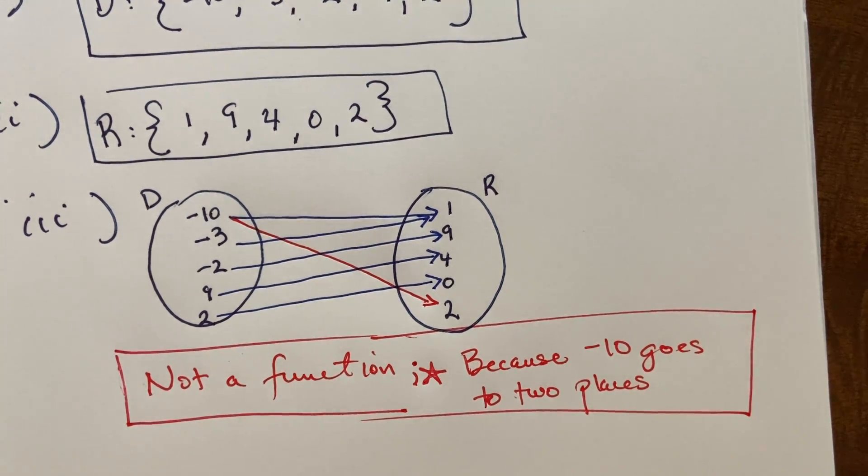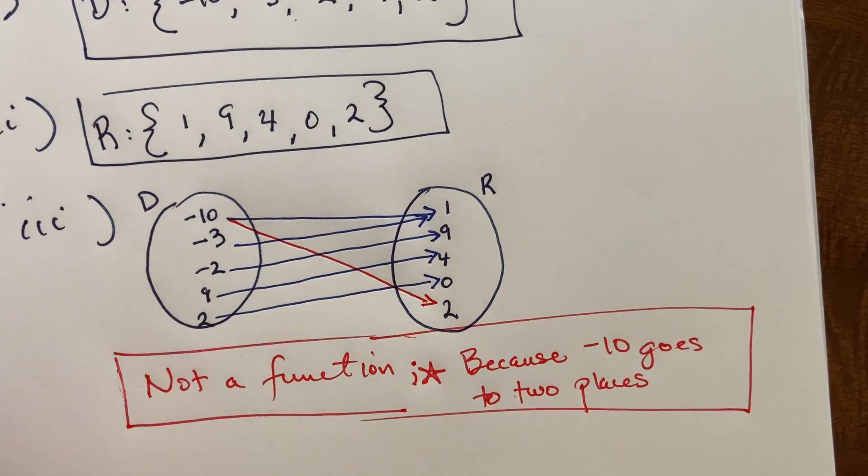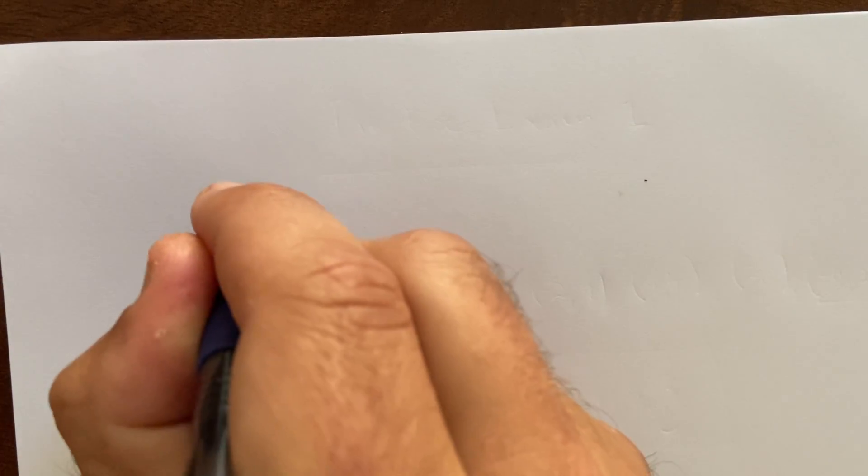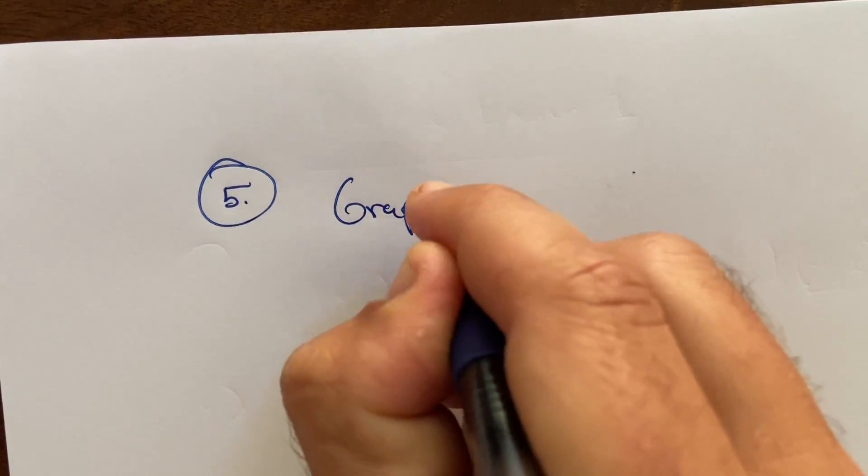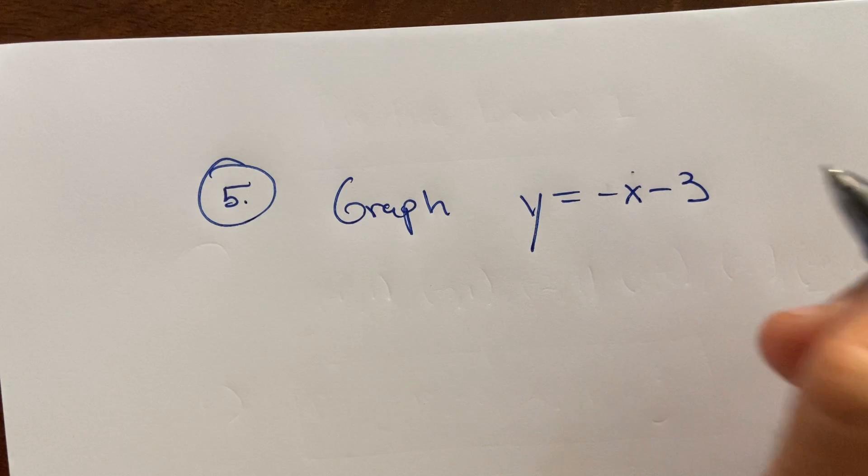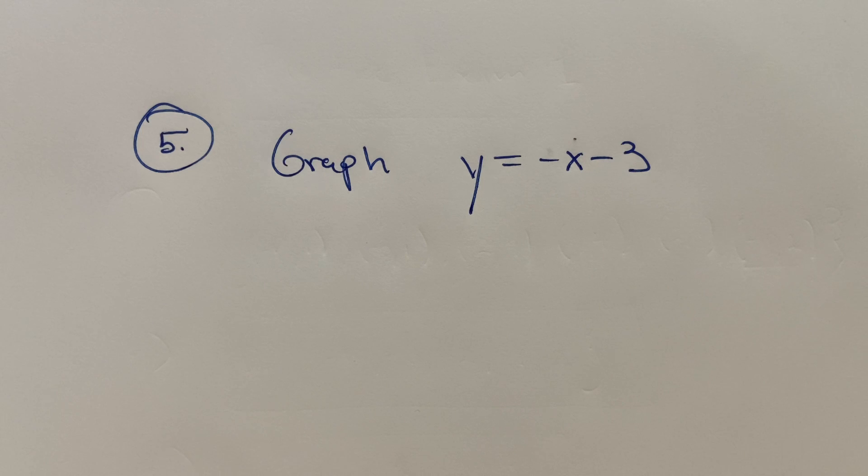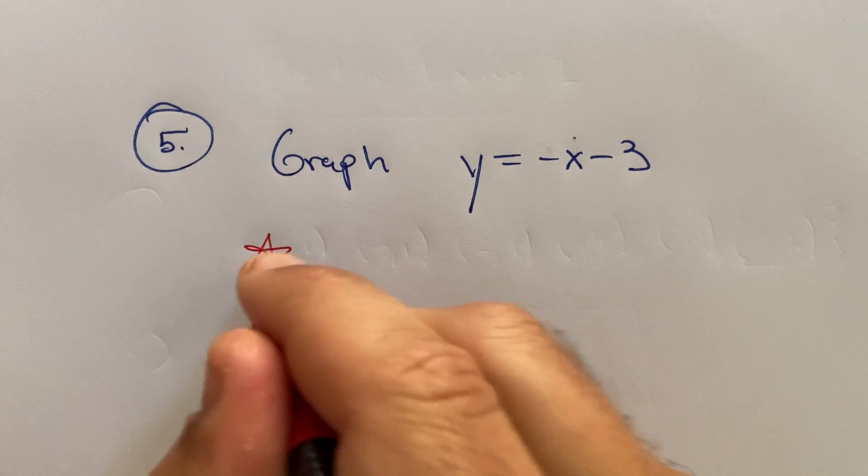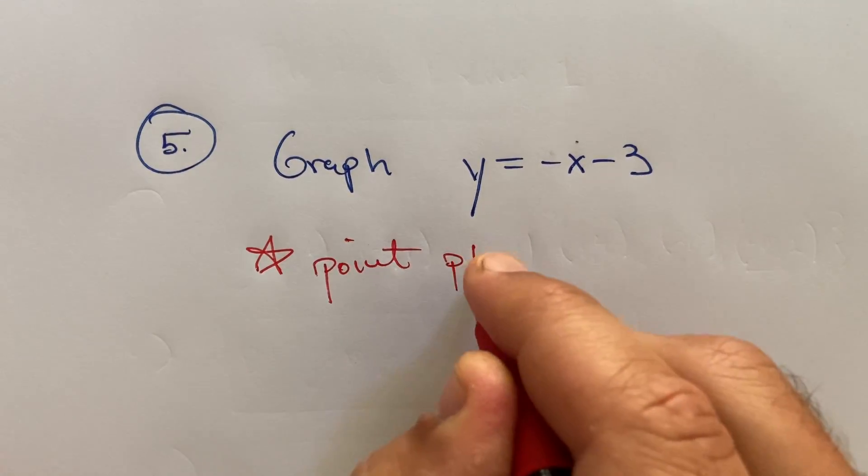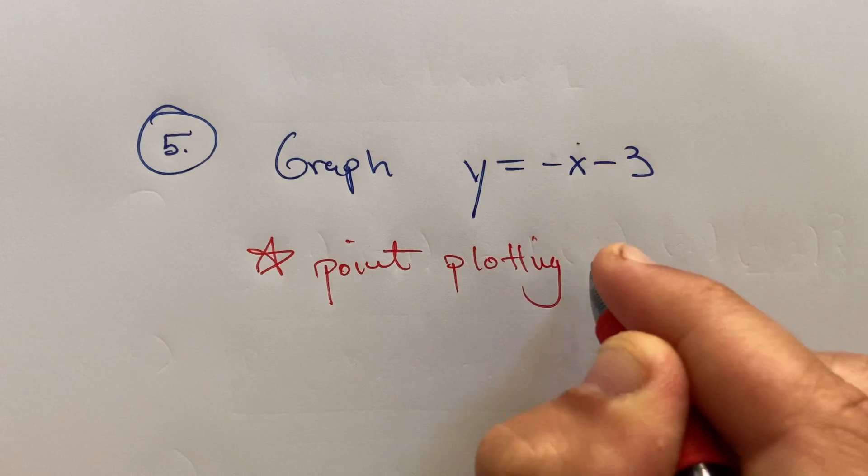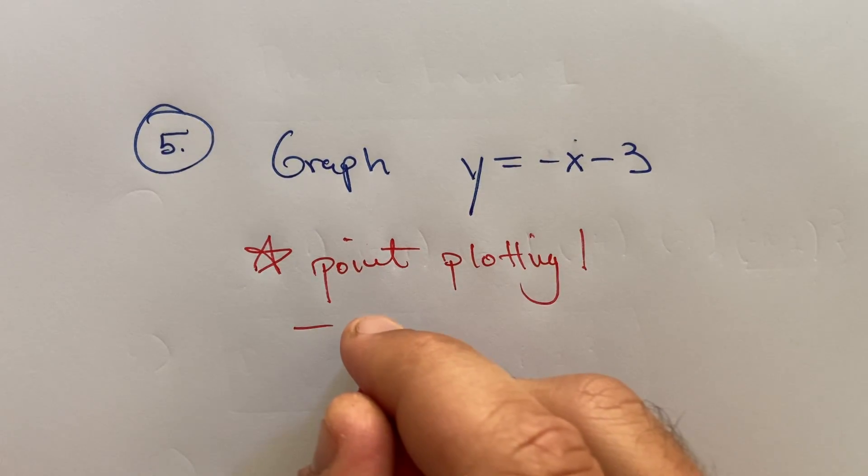All right, so that's number three. I'm going to skip number four because it's very similar. I'll go to number five. It says graph the equation y equals negative x minus three. The main way that I've been teaching you guys or encouraging you guys to graph is through the point plotting method. So that point plotting method—basically pick x's, find y's.